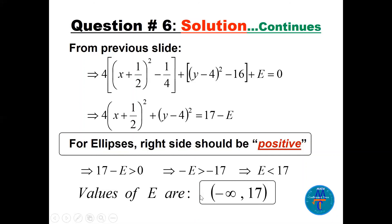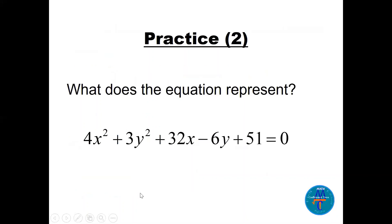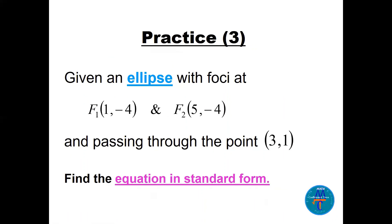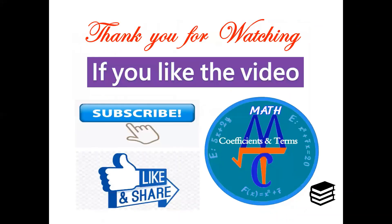Now for practice: Question 1 — a general-form equation where you complete the square and find the required properties. Question 2 — determine what the equation represents by completing the square. Question 3 — given foci F1 and F2 and a point (3, 1), find the equation of the ellipse in standard form. The answers only are provided on the last slides. Thank you very much for watching — I hope to see you in another video.